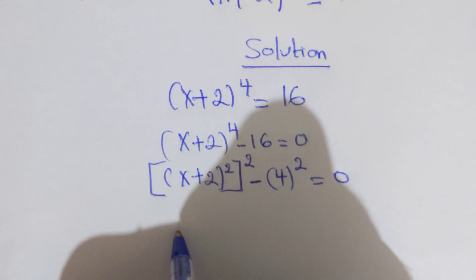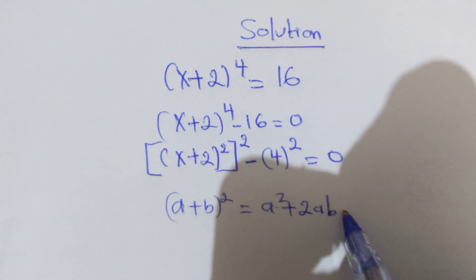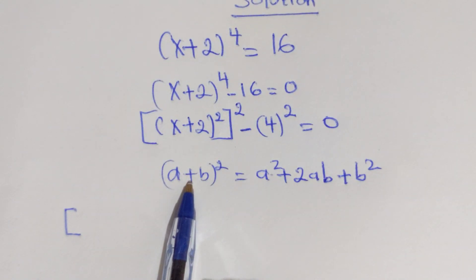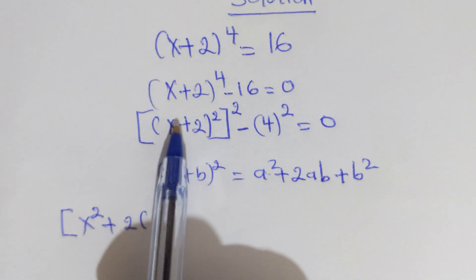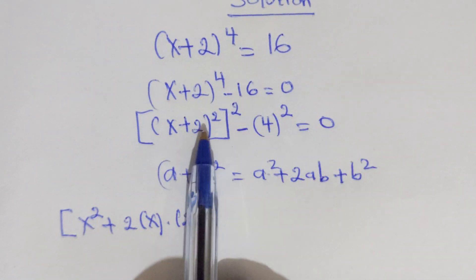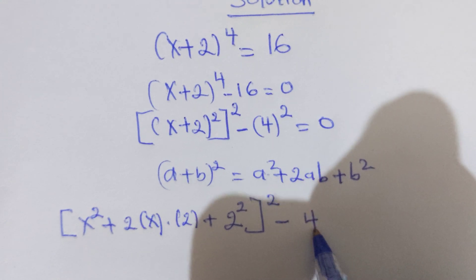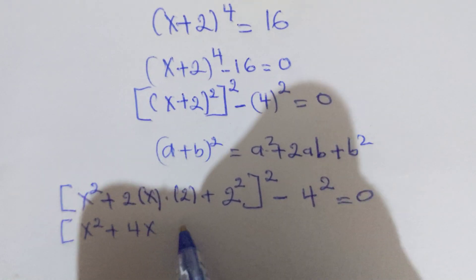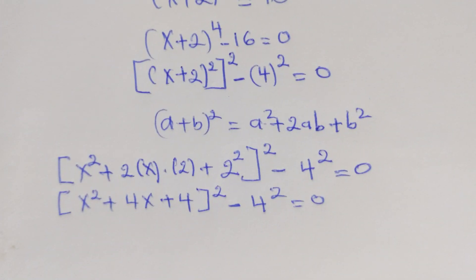This can be written using the formula (a + b)² which equals a² + 2ab + b². Here a equals x, b equals 2, so expanding gives us x² + 4x + 4, all squared, minus 4 squared, which equals zero.